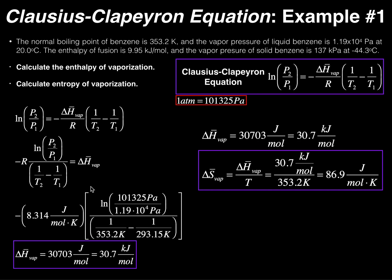Now that we have the equation solved for ΔH_vap, we need to think about the problem before plugging numbers in. We're calculating the enthalpy of vaporization — vaporization means going from a liquid to a gas. So the initial state is liquid and the final state is gas. The subscript 1 quantities, T1 and P1, correspond to the liquid; the subscript 2 quantities, T2 and P2, correspond to the gas.